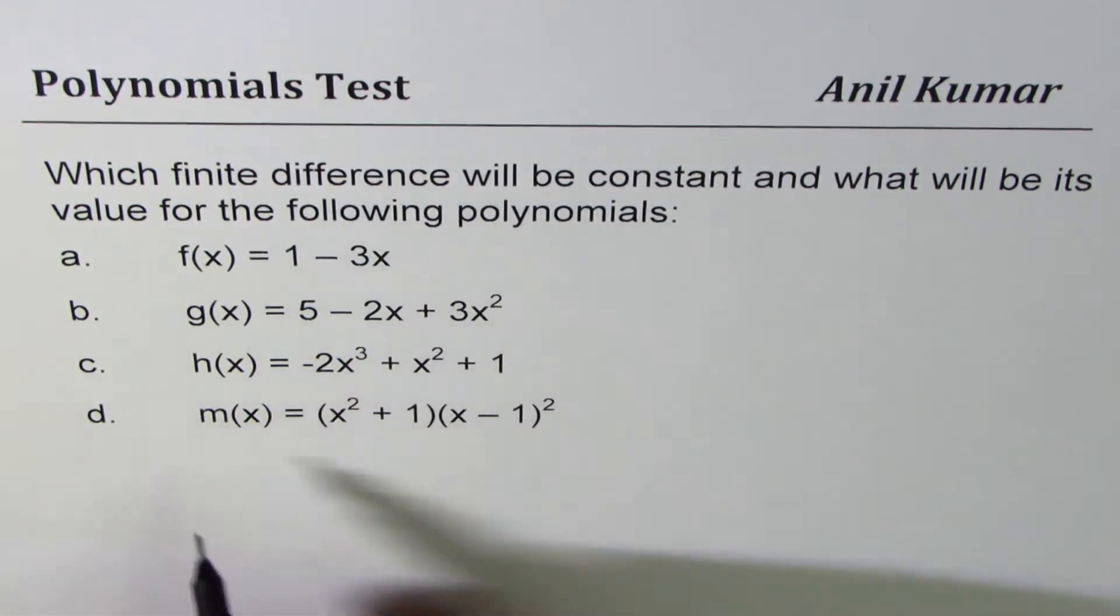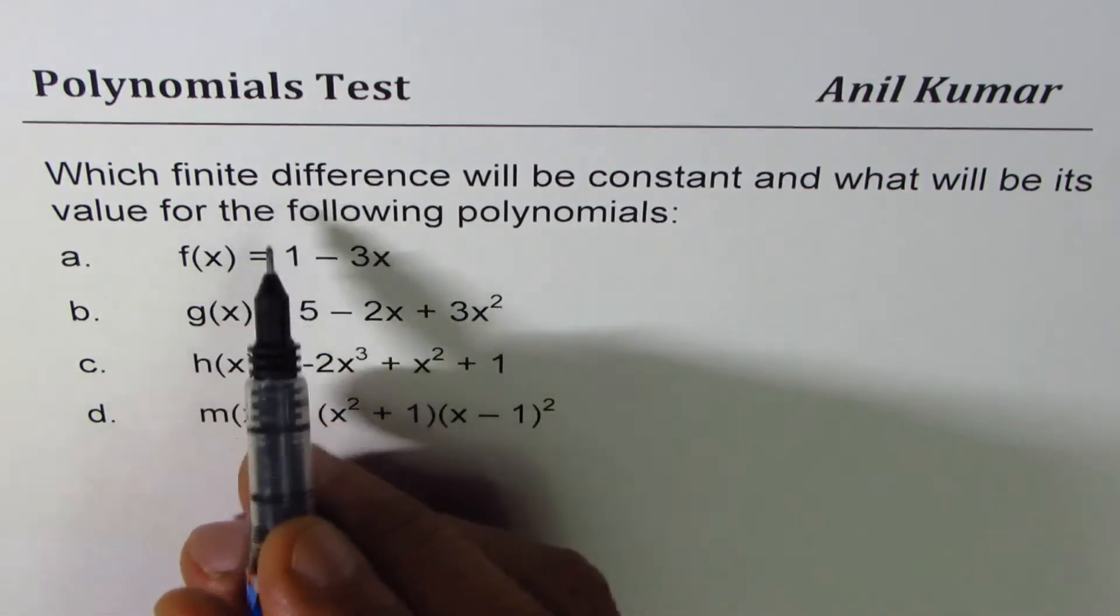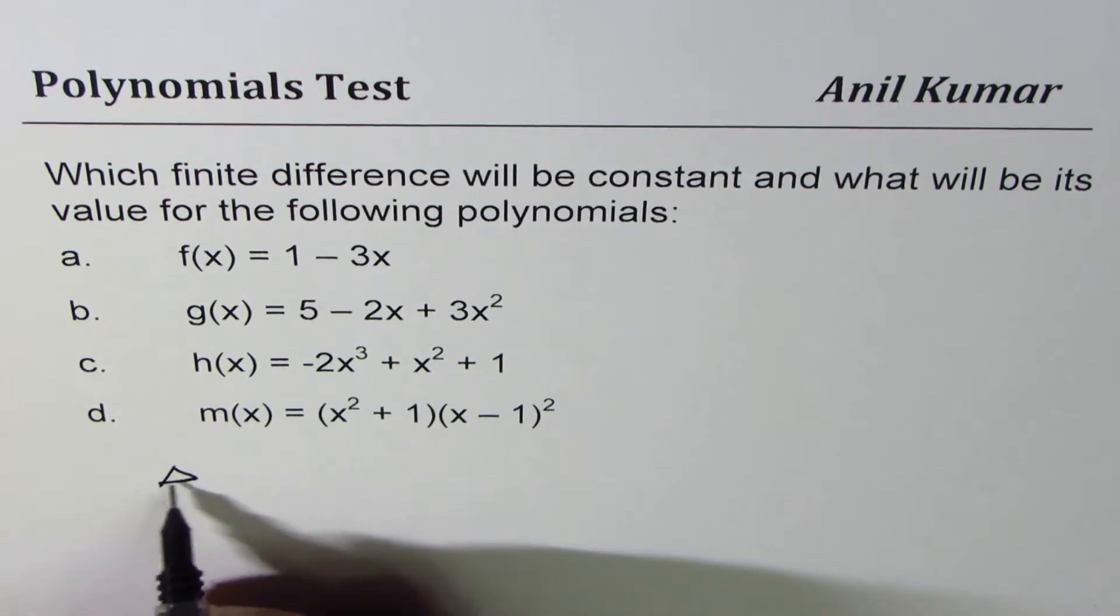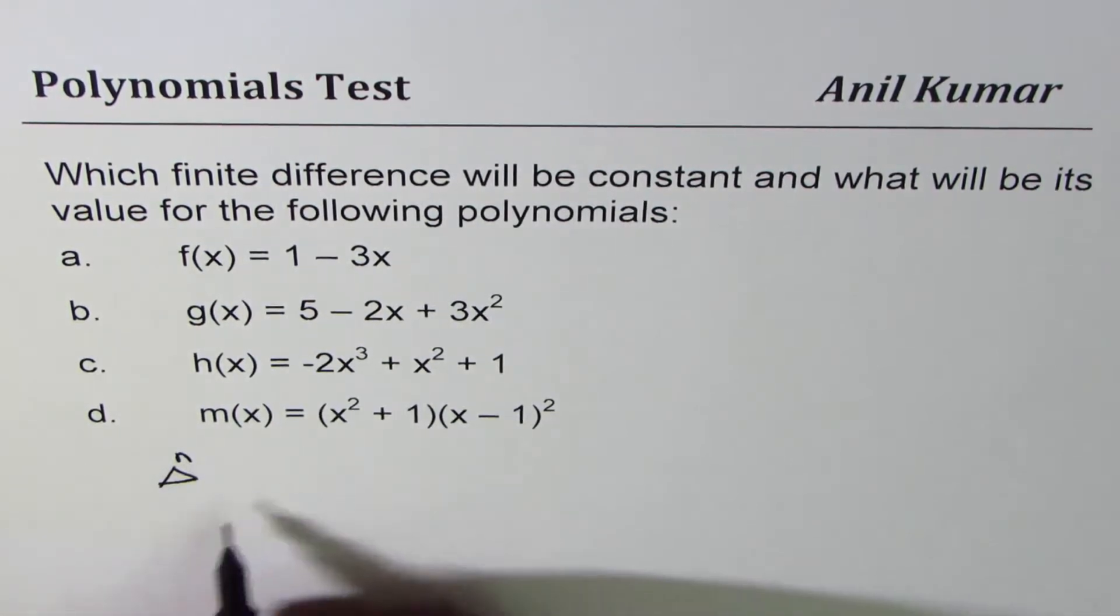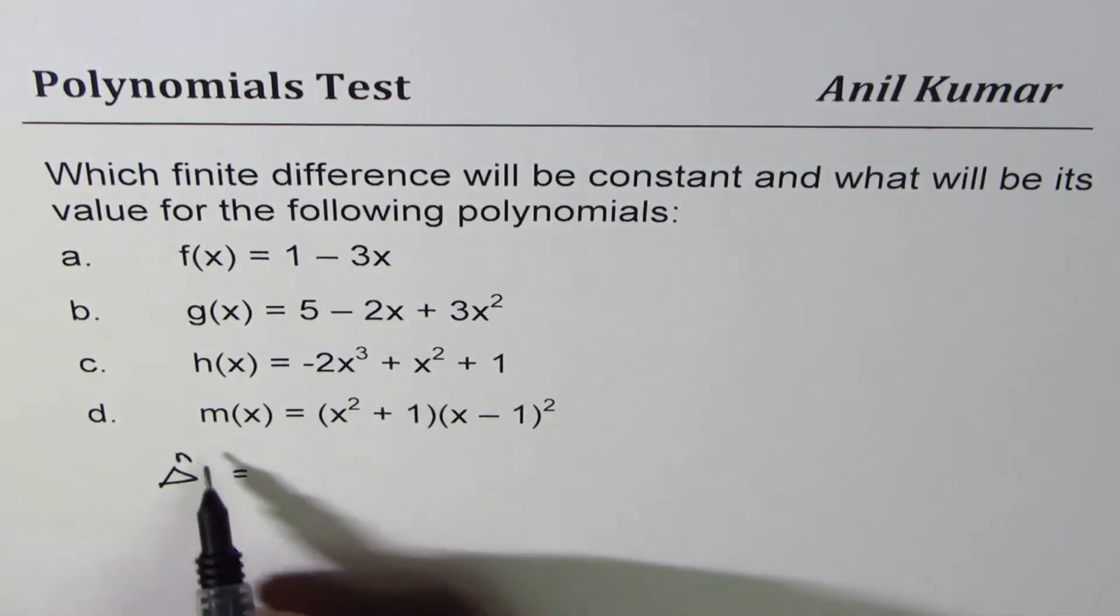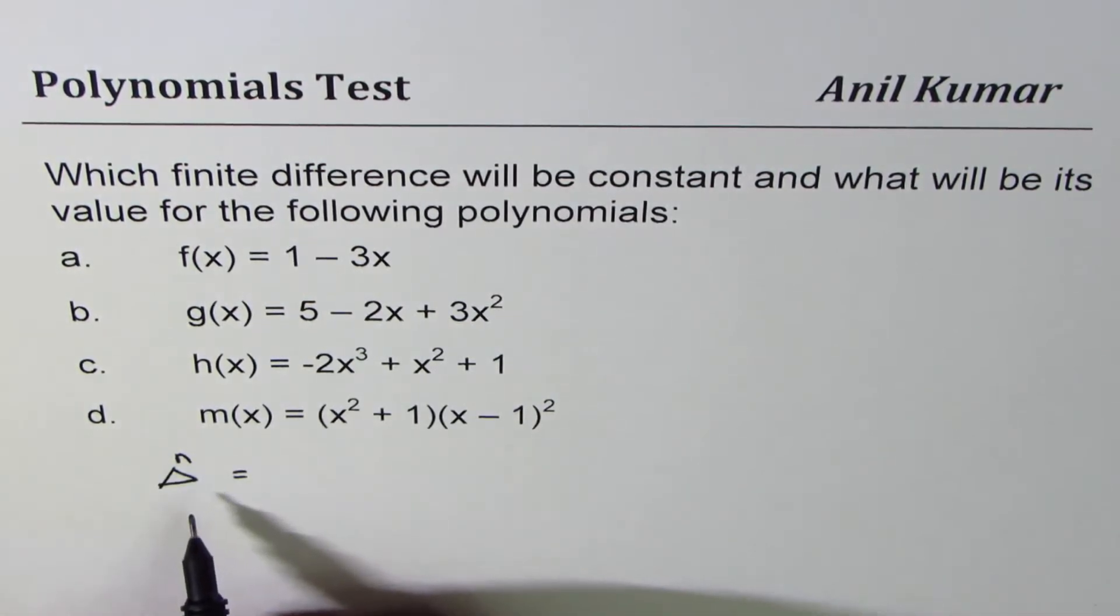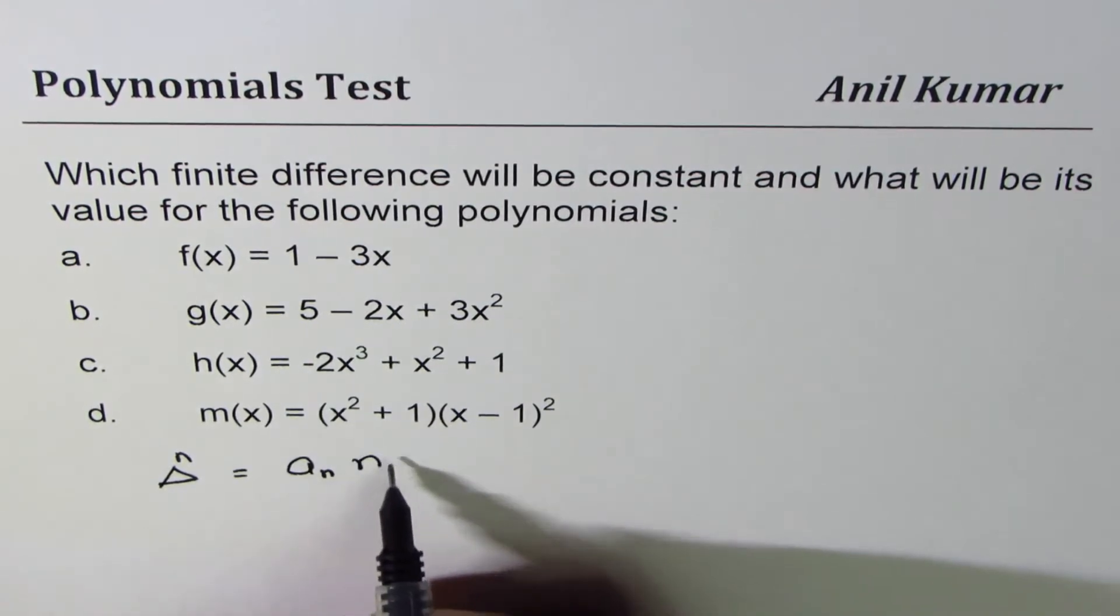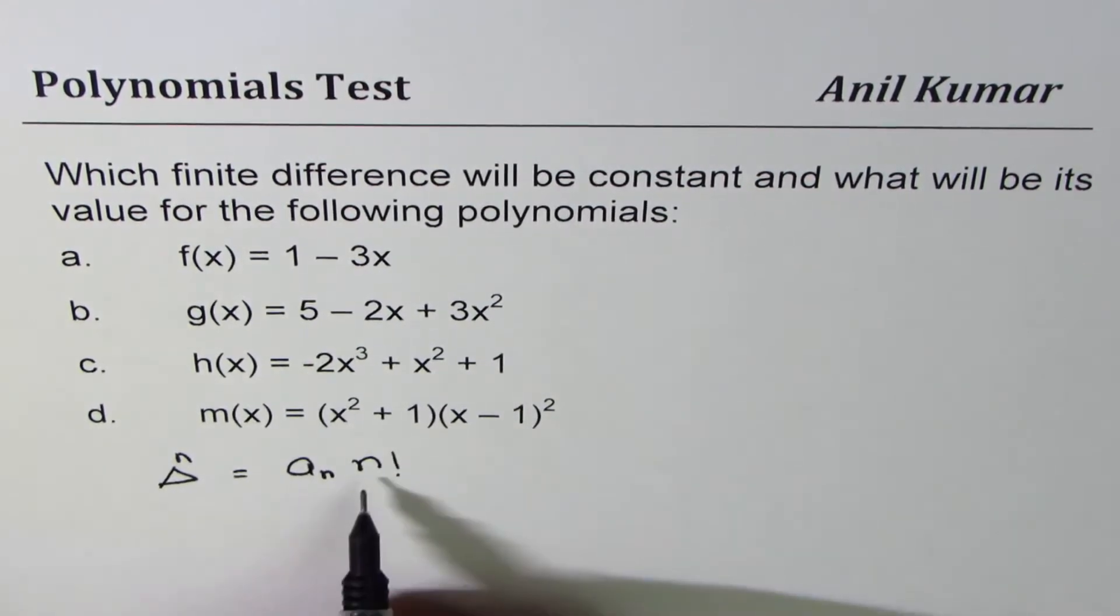Now finite difference, constant finite difference really depends on the degree. So let's say delta is the finite difference, n is the degree. Then the relation between the value of this finite difference is leading coefficient times n factorial where n is a degree.